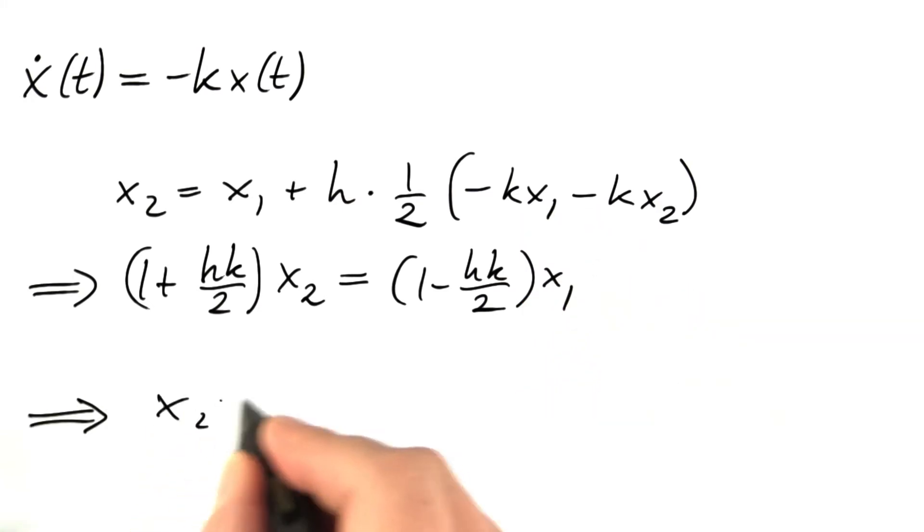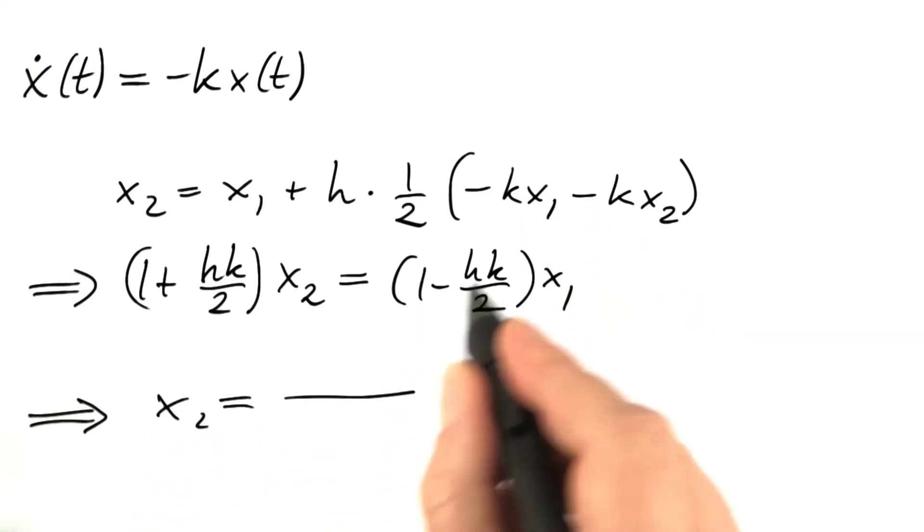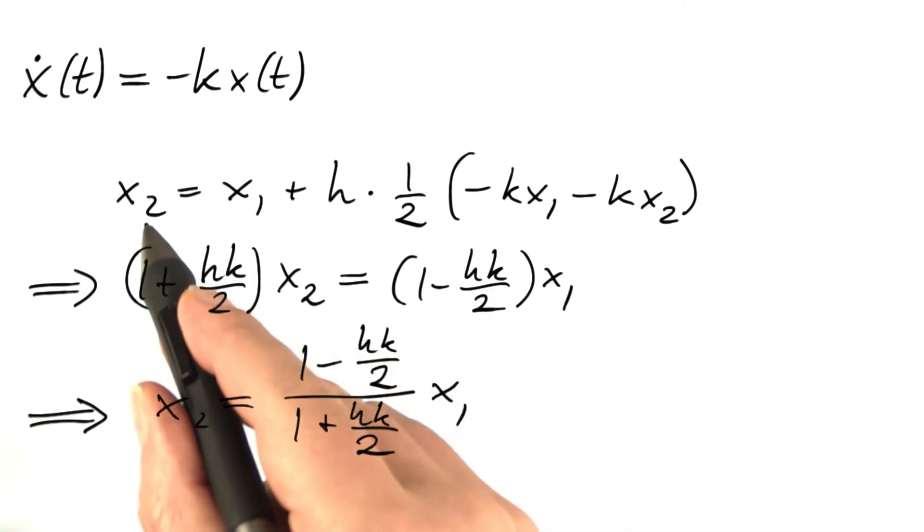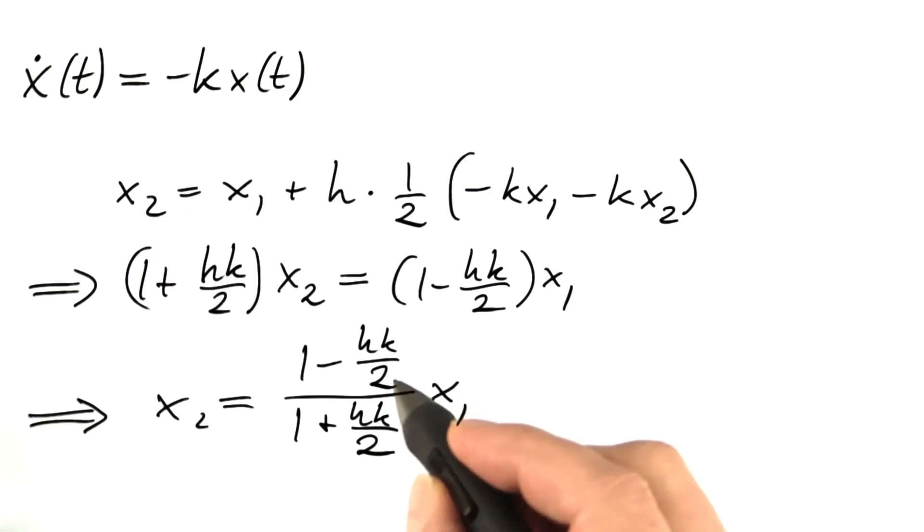And that's easy to solve for x2. x2 equals 1 minus hk over 2 divided by 1 plus hk over 2 times x1.